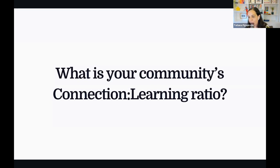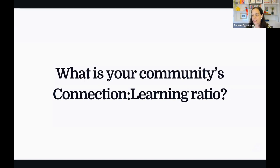There are some ratios coming in: 35-65, more on the learning side. 60-40, more on the connection side. 40-60, more on the learning side. 40-60, cohort-based course every 12 weeks. 25-75, more on the learning side. And then 80-20, more on the connection side.